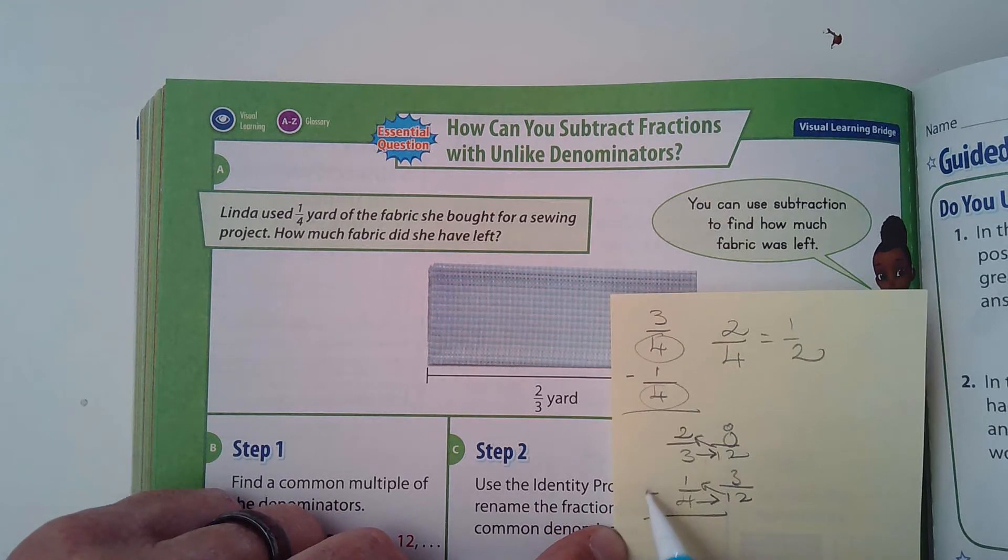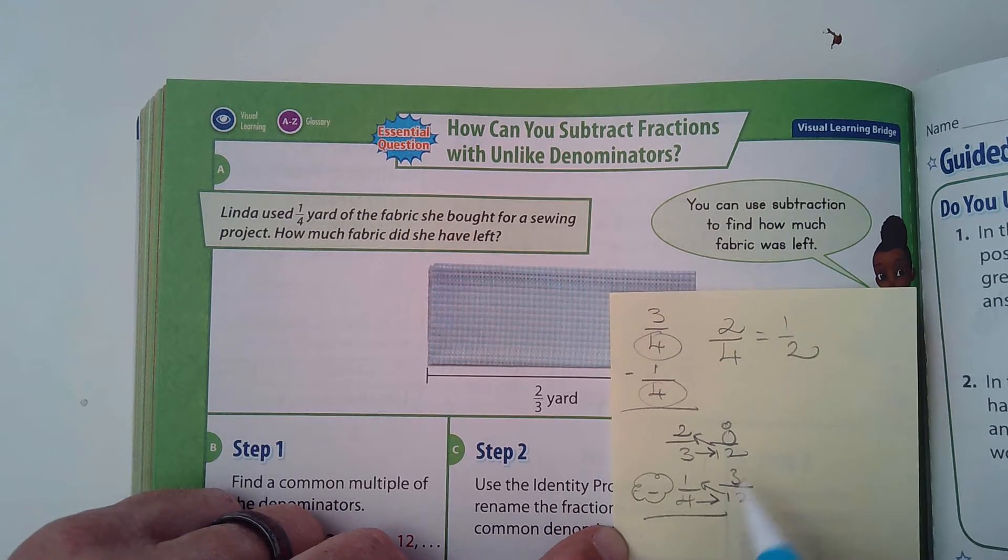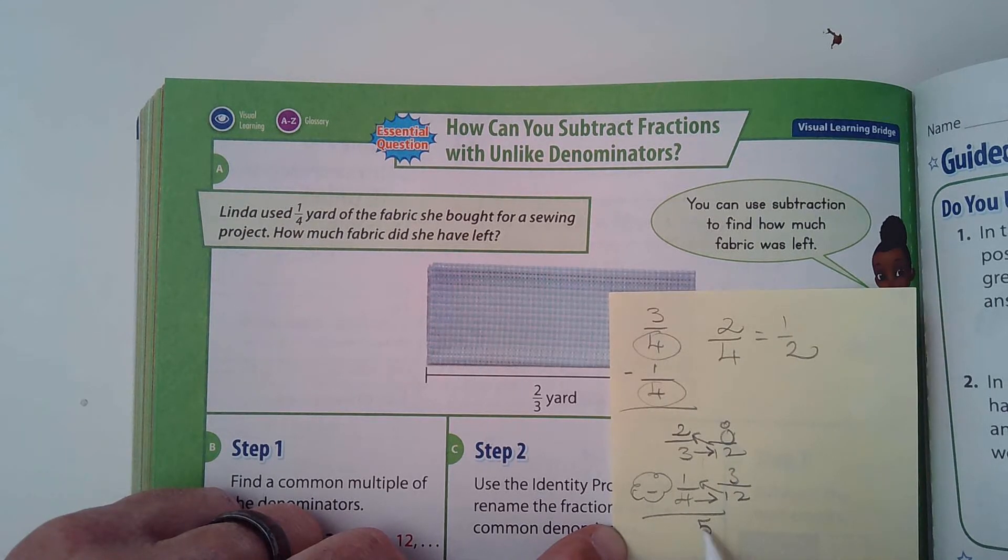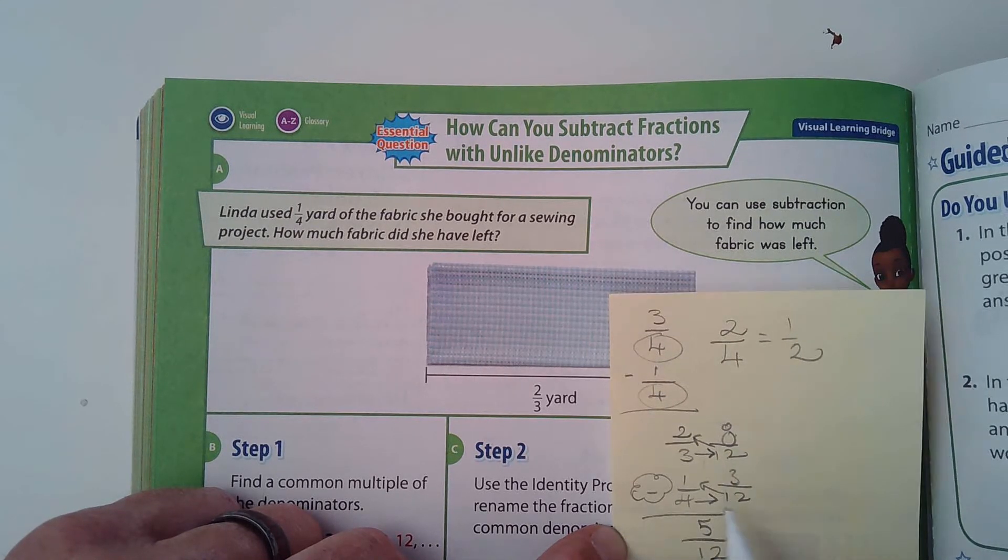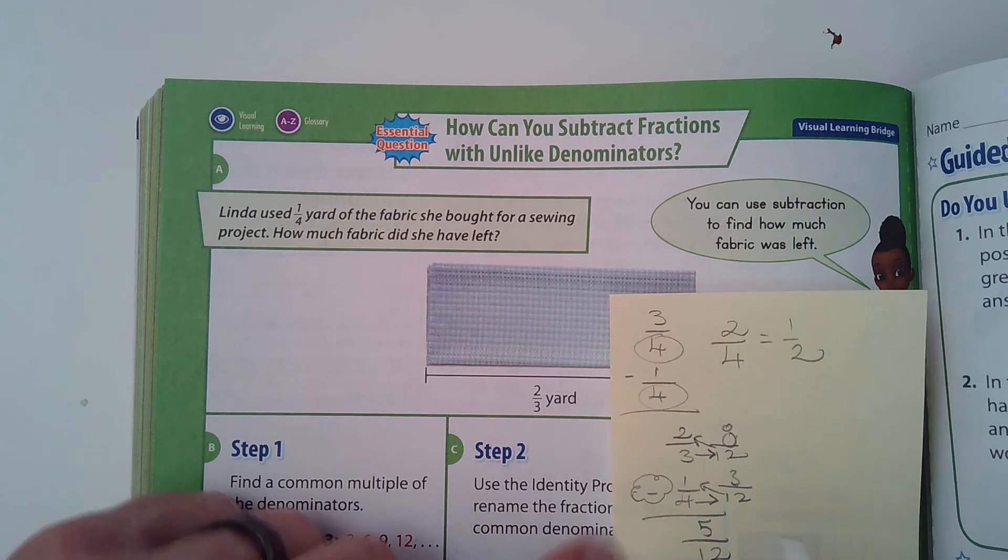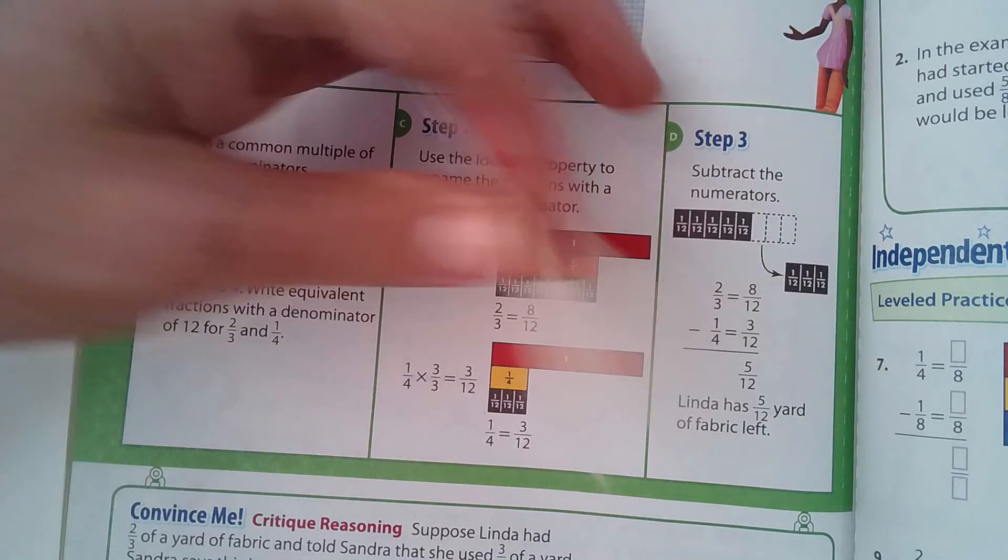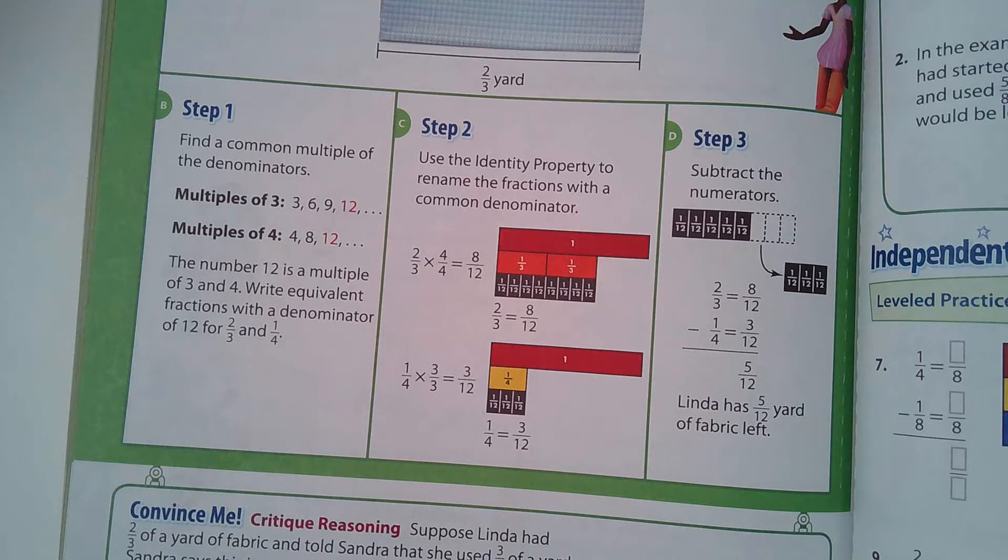Four goes into 12 three times, times one is three. Three goes into 12 four times, and four times two is eight. Remember, this is subtraction. So three from eight is five. Five-twelfths is the answer.